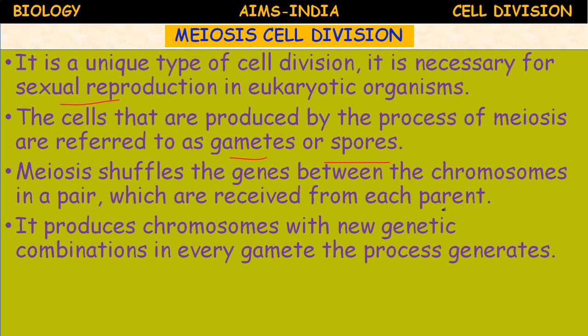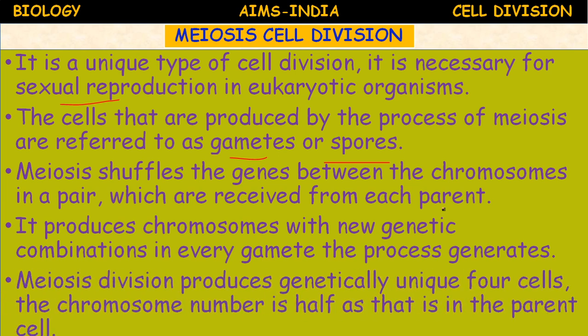Meiosis produces chromosomes with new genetic combinations in every gamete. It produces genetically unique four daughter cells, where the chromosome number is half that of the parent cell. If the parent cell is diploid, the daughter cells are haploid — exactly half. That is why meiosis division is a unique cell division.